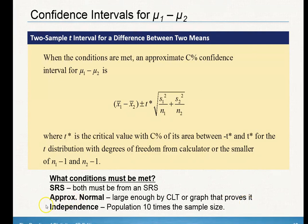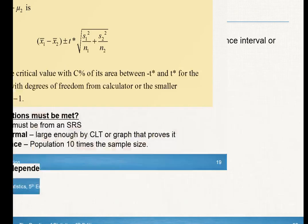This independence condition is different than your simple random sample. Your state is stating that both samples are independent, and with your independence condition, you're saying that the population is 10 times the sample size for both of them, not just for one of them. Be very careful with that.